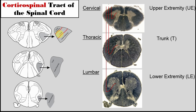The axons traveling down to the trunk come out at trunk levels. Lower extremity axons continue to descend to the lumbar and sacral levels, where these axons come out to innervate leg muscles.